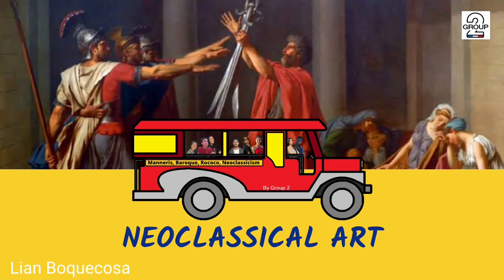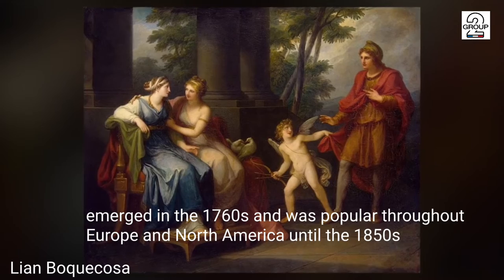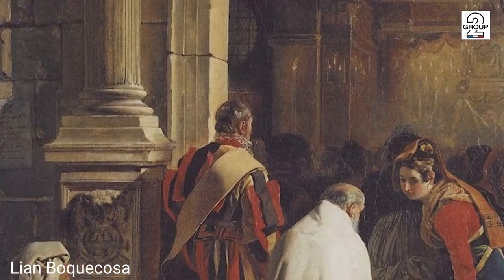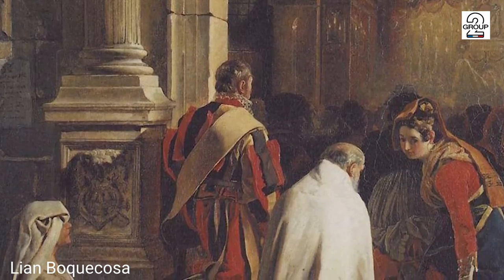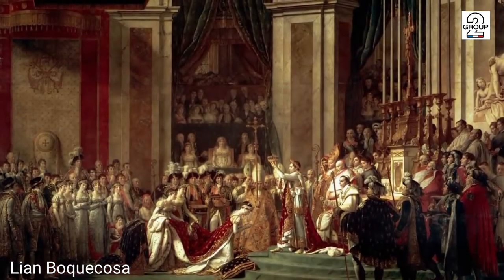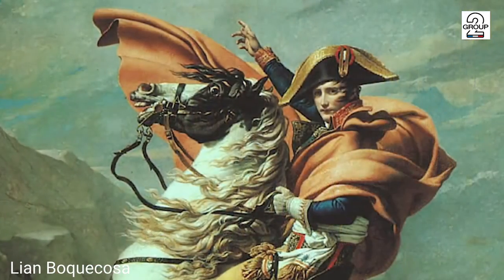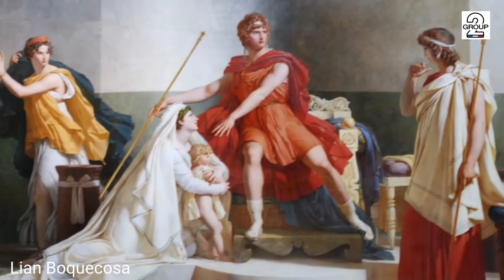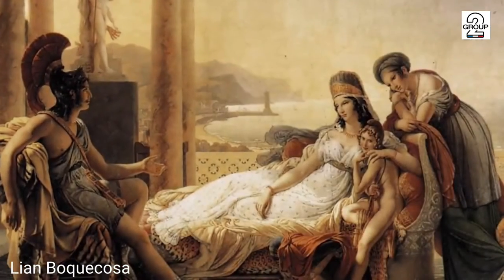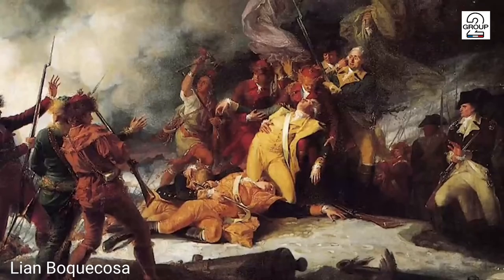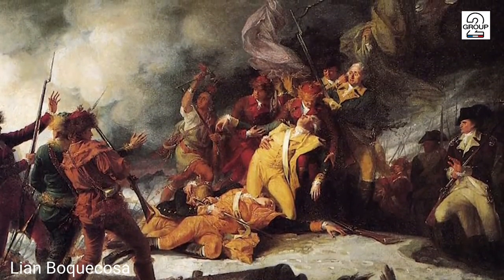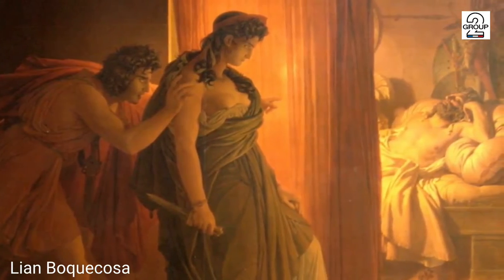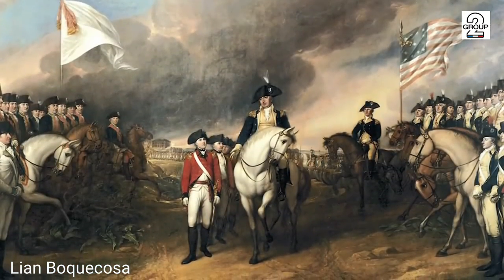Neoclassical art emerged in the 1760s and was popular throughout Europe and North America until the 1850s. Breaking away from the emotionally charged Baroque style, Neoclassical artists looked back to the classical style of art. Neoclassical art can sometimes appear cold and unemotional, but in fact some of the most popular Neoclassical themes were emotional subjects like patriotism, sacrifice, and courage. The Neoclassical style is known for its formal composition, accurate detail, and solid lines. Common themes included patriotism, honor, and human rights.